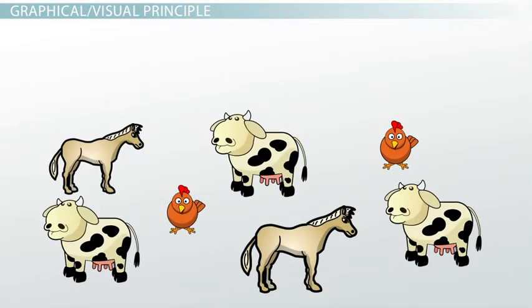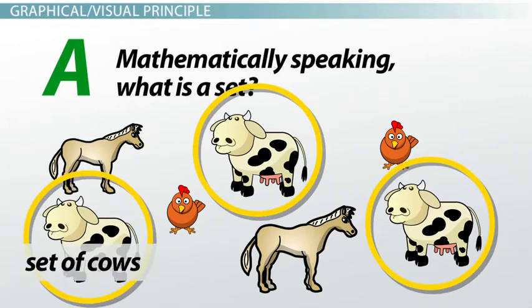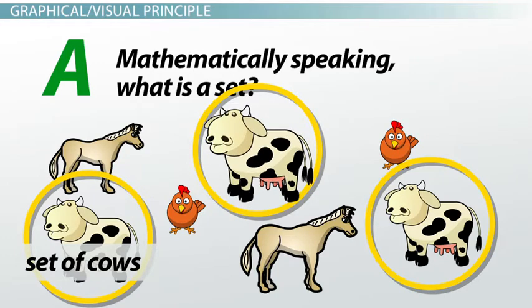Back to sample question 1: Mathematically speaking, what is a set? We could draw the concept of a set by imagining a set of cows and drawing a circle around just the cows in this picture. Now we can visually see that a set is a grouping together of items based on a pre-stated condition. Here, the pre-stated condition was that the animal had to be a cow.